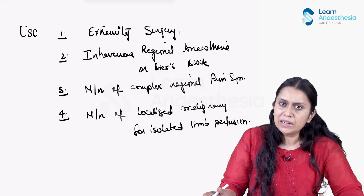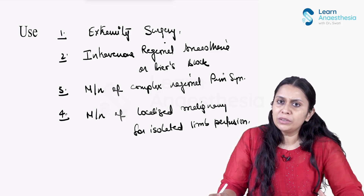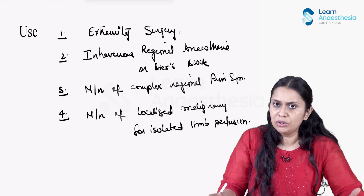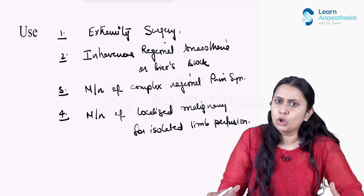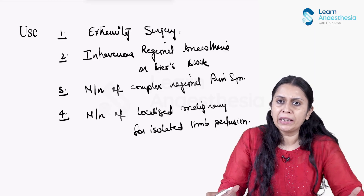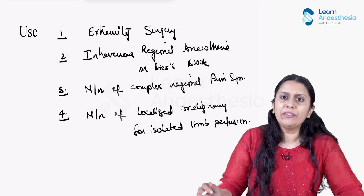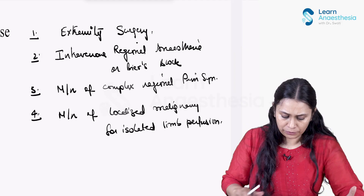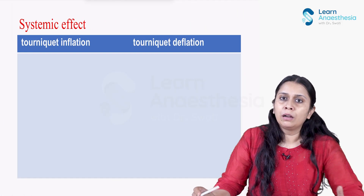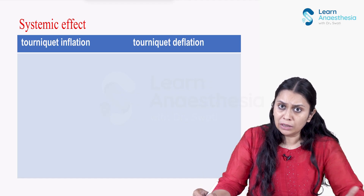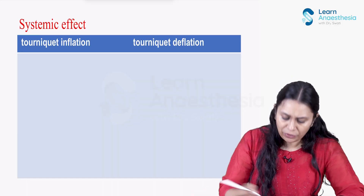The use of a tourniquet has several advantages and disadvantages. When using a tourniquet for limb surgery, blood loss definitely decreases. However, we need to practice certain precautions and take proper tourniquet care for the best outcome. Let us first discuss the systemic effects of tourniquet inflation and deflation.